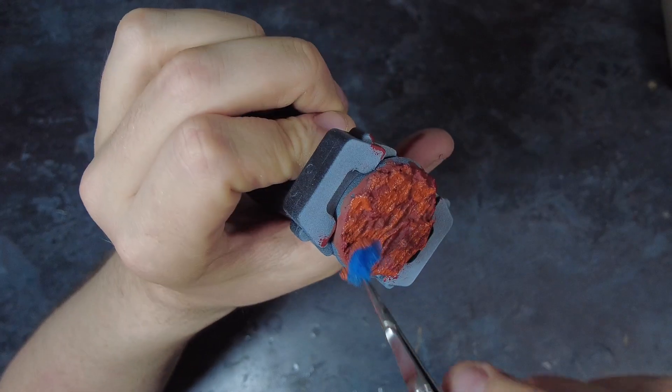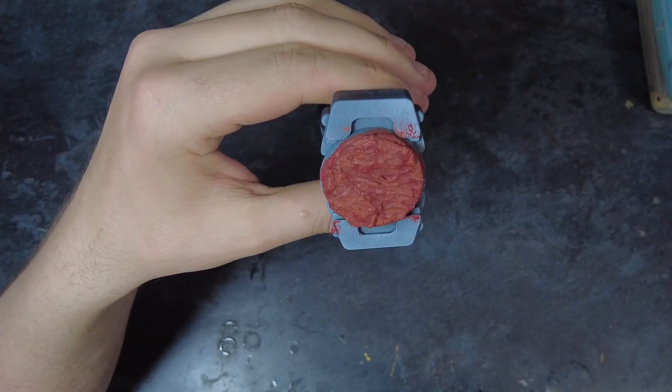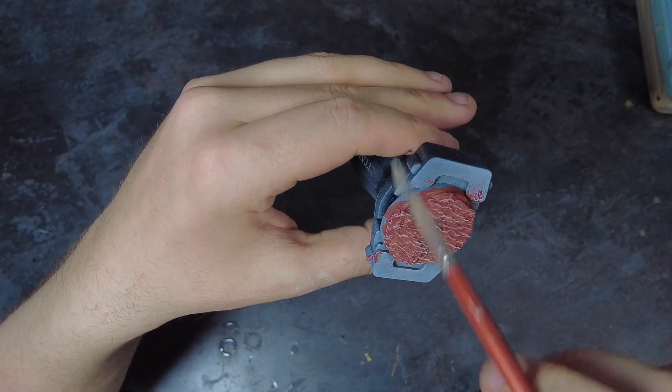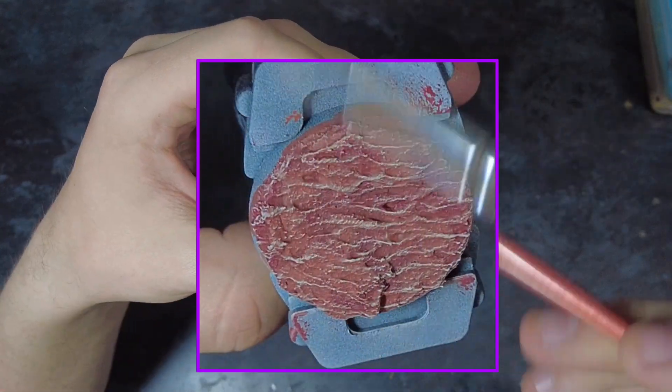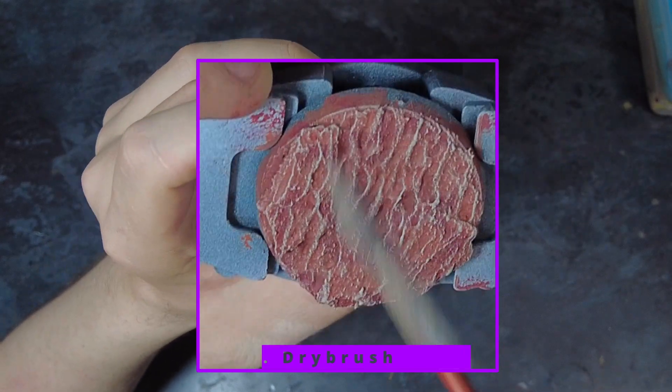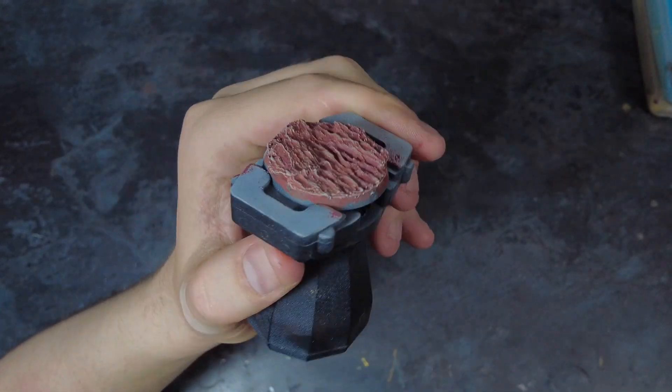With this achieved we can go on and take a light cream or a pale flesh tone, and start to dry brush this across the entirety of the base, catching the highest raised areas of the rocks and the texture paste. And by doing this we should see the full array of textures across the base that we've spent our time creating up until this point. Okay, so cards on the table.